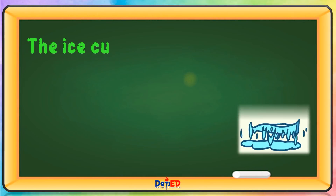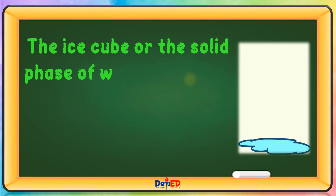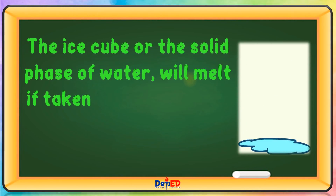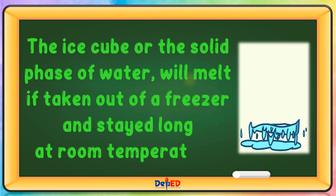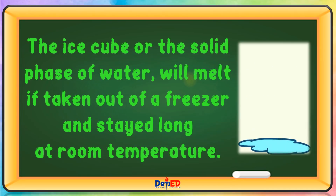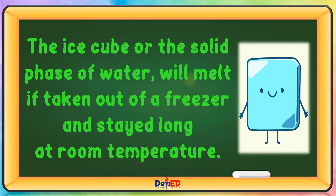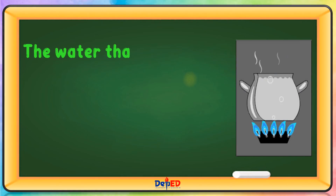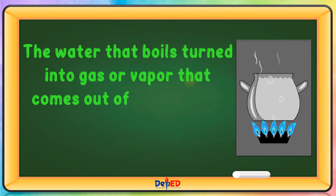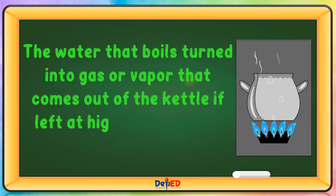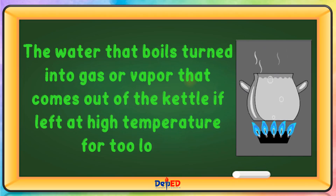The ice cube, or the solid phase of water, will melt if taken out of a freezer and left at room temperature. The water that boils turns into gas or vapor that comes out of the kettle if left at high temperature for too long.